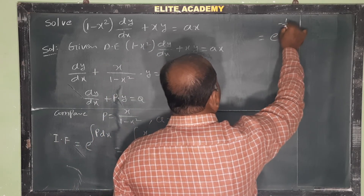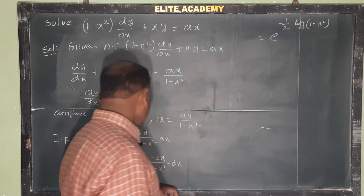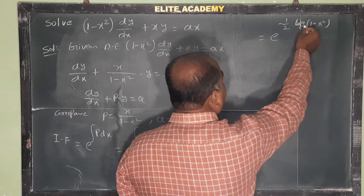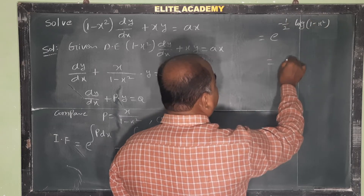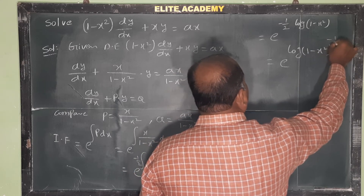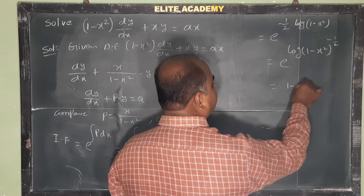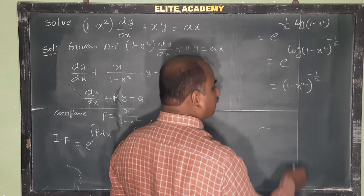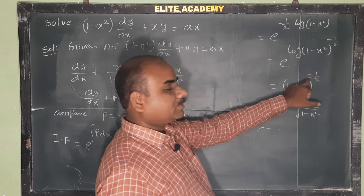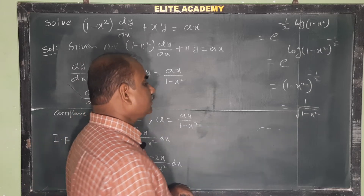So the integrating factor becomes e^((-1/2) log(1 - x²)). Since ∫ f'(x)/f(x) dx = log|f(x)|, this is e^(log(1 - x²)^(-1/2)). Since e^(log(...)) cancels, it equals (1 - x²)^(-1/2), which is 1/√(1 - x²). This is our integrating factor IF.